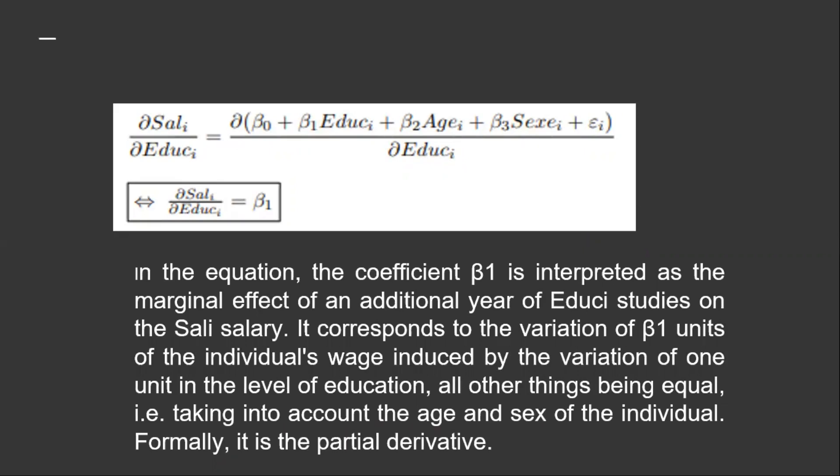The coefficient beta_1 is interpreted as the marginal effect of an additional year of education on wages. It corresponds to the variation of beta_1 units in the individual's salary induced by the variation of 1 unit in the level of education.